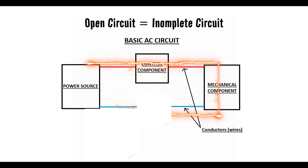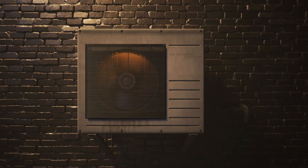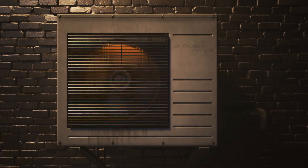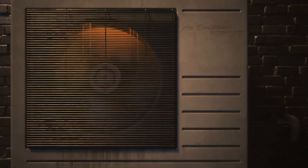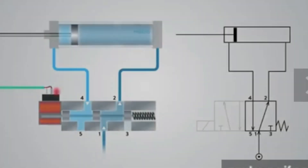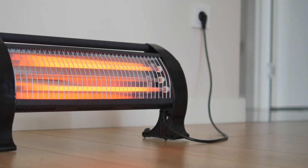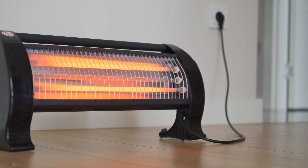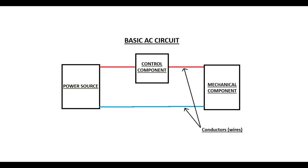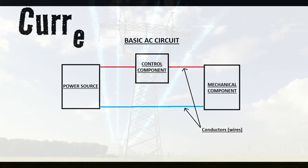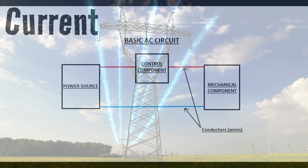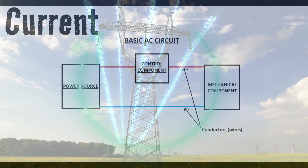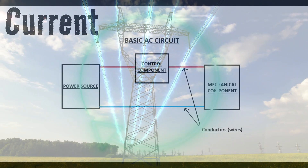Without that motion, we can't convert moving electricity into some useful end product — whether it's a spinning motor, a contactor that pulls in, a solenoid that activates, a heater that heats a room, or a light bulb that lights the way. So when I talk about moving electricity, what I'm really talking about is current. In order to get that current, we need electricity to be able to travel full circle through the circuit.